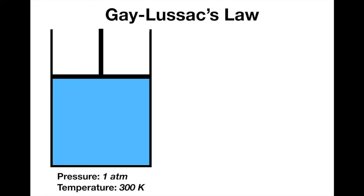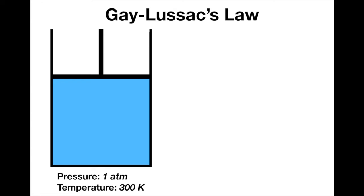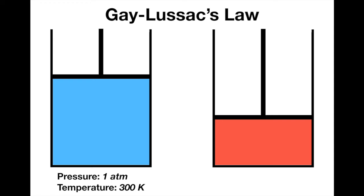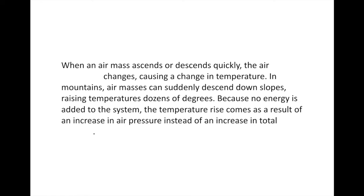Here I have a cylinder with a fluid in it. The pressure is 1 atmosphere and the temperature is 300 Kelvin. If I double the pressure by pushing down on the piston — reducing it to half the size — the pressure goes up to 2 atmospheres. Because of Gay-Lussac's Law, doubling the pressure doubles the temperature, so it's now up to 600 Kelvin. That's essentially an adiabatic process — there's no change in the total amount of thermal energy; the thermal energy has just been compressed into a smaller space.